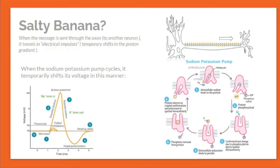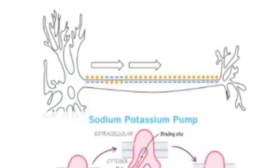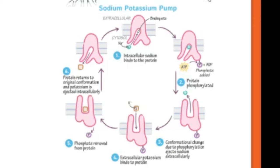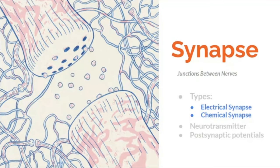When a message is sent through the axon, it travels as electrical impulses with temporary shifts in the proton gradient during sodium-potassium pump cycles. The sodium-potassium pump uses active transport. The cycle: step one — intracellular sodium ions bind the protein; step two — the protein becomes phosphorylated; step three — conformational change ejects sodium ions extracellularly; step four — extracellular potassium binds; step five — protein is dephosphorylated; step six — dephosphorylation returns the protein to original conformation and ejects potassium ions intracellularly. The pump then recycles.